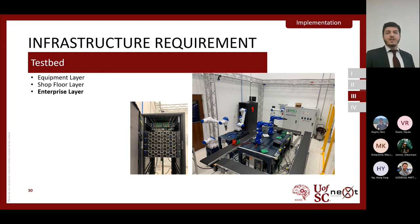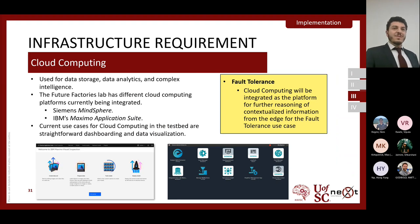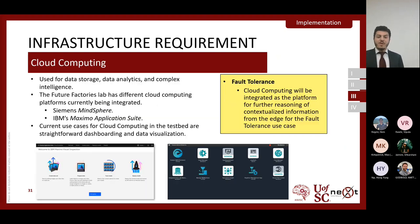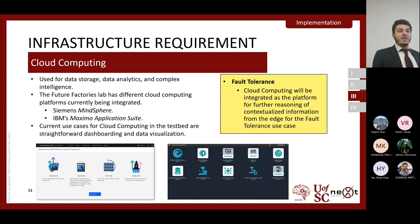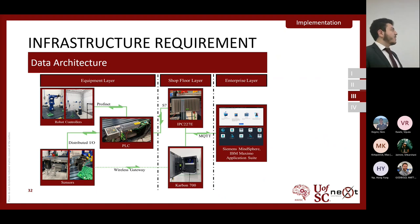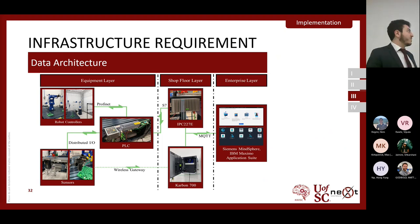Finally, there's the enterprise layer, which includes our server box with four racks each having very large computing power, and cloud platforms used in Future Factories: Siemens MindSphere and IBM's Maximo Application Suite. Some of these platforms are still being configured but are used to store data and for simple visualization. For our fault tolerance use case, cloud computing is where we do more complex processing that cannot be done at the edge layer. This ties all layers together: equipment layer feeds into edge devices, which feed into the enterprise layer with cloud platforms.